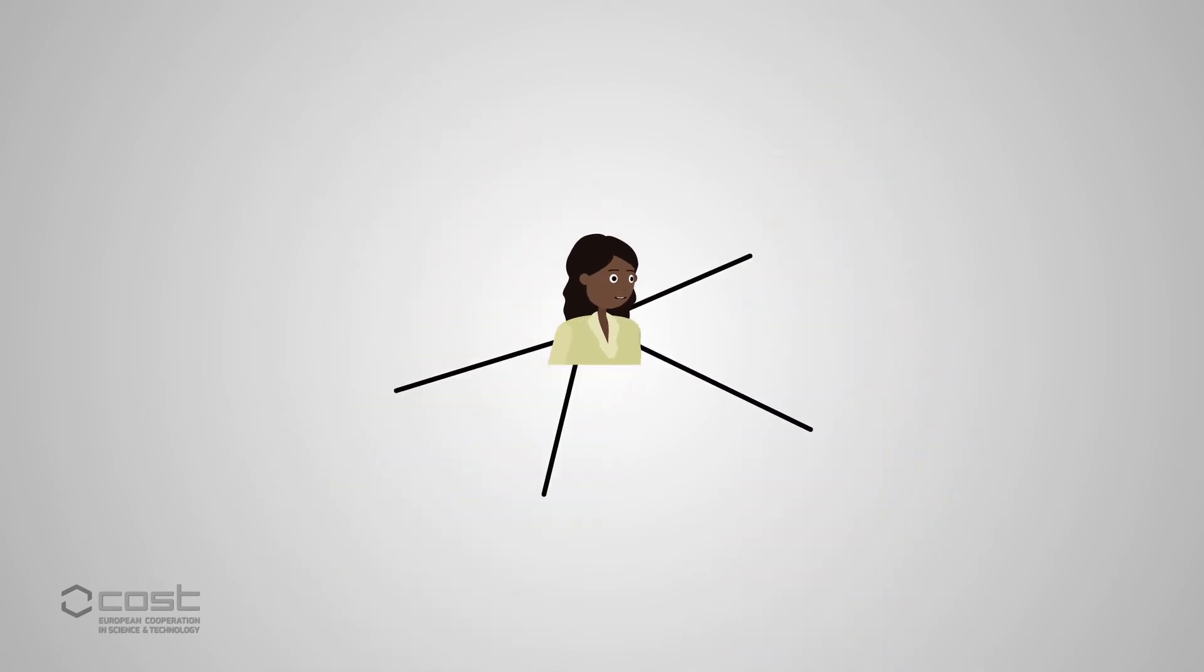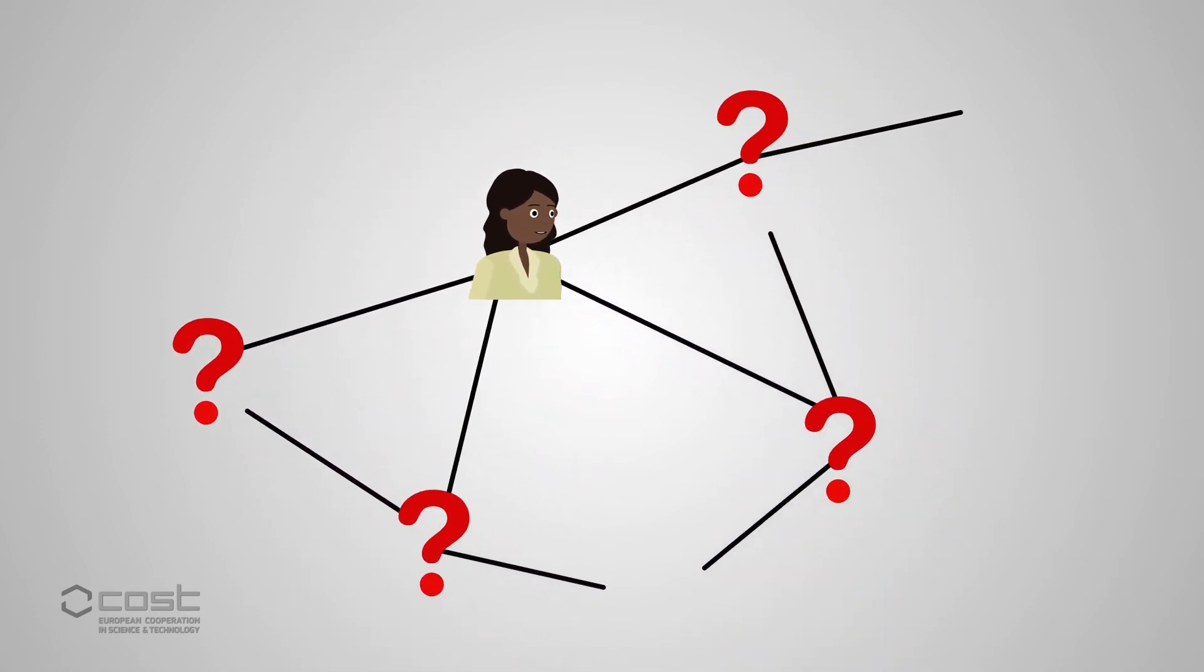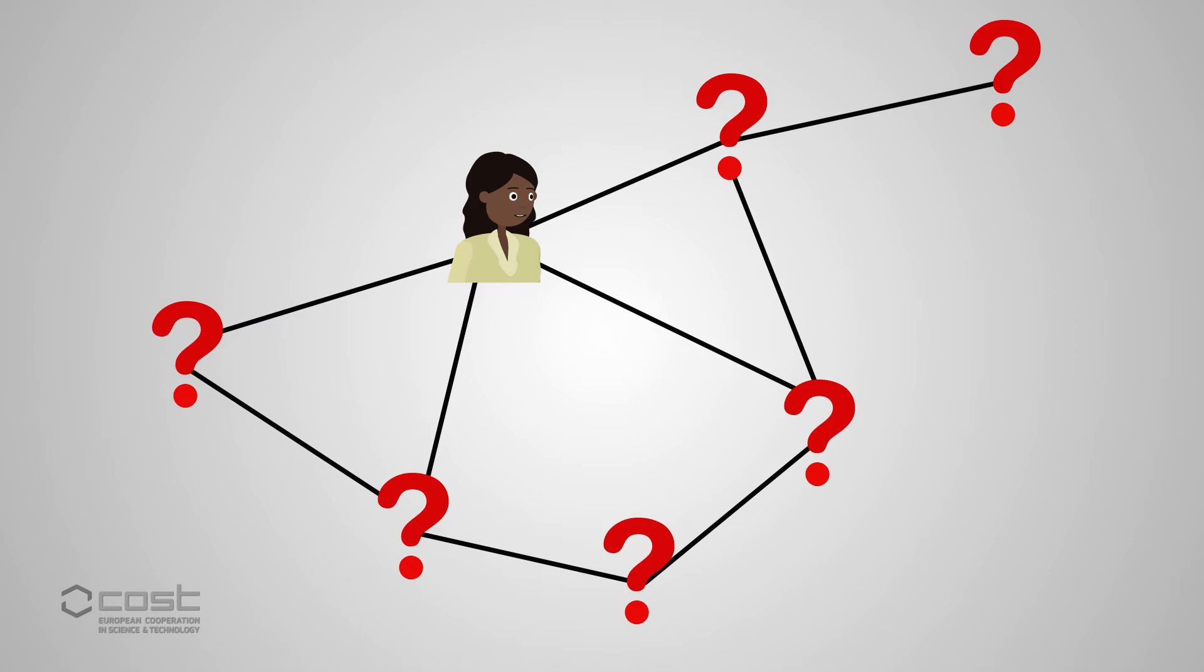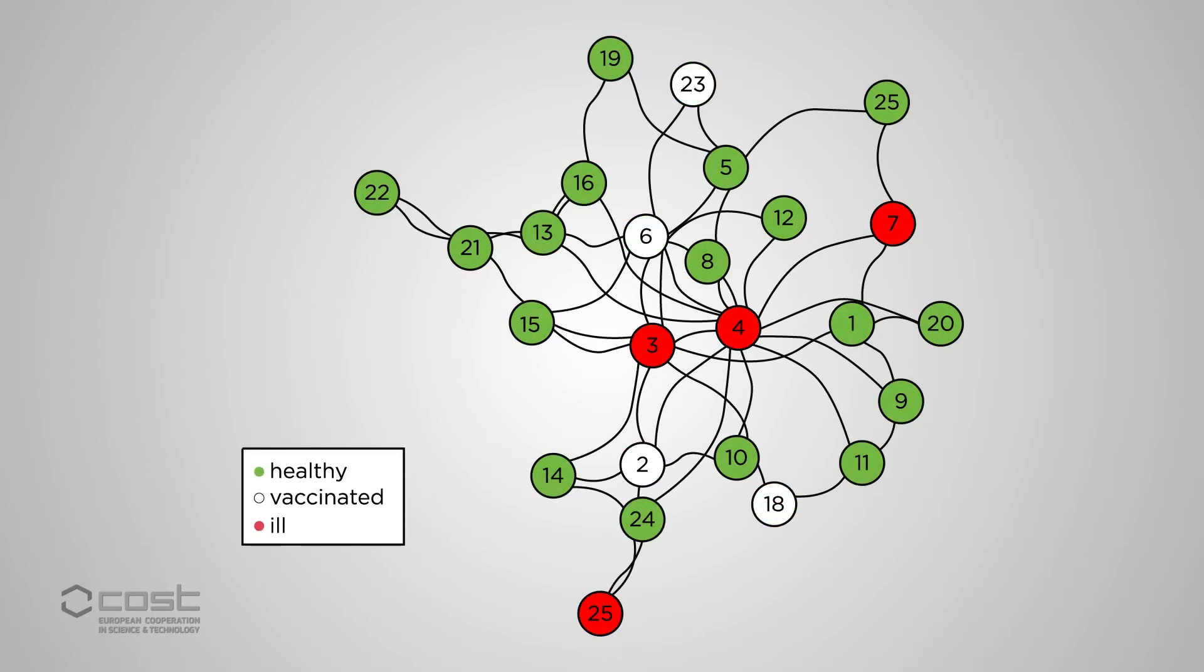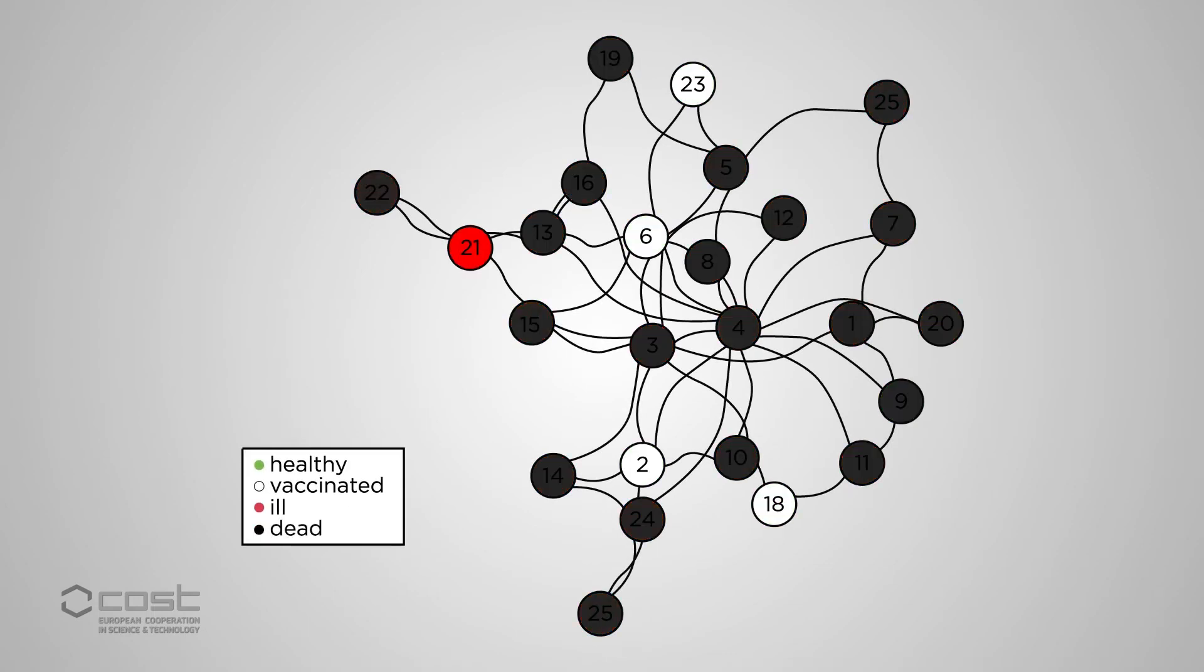Ideally, we'd aim for the hub in the middle of the smaller networks, as they have contact with the most people. But how can we identify who these hubs are? If we randomly vaccinate people, it's highly unlikely that we'll be successful.